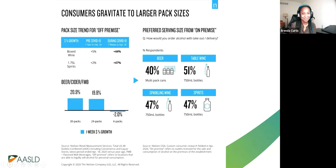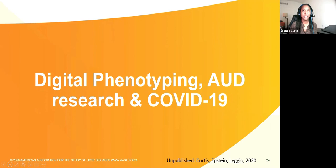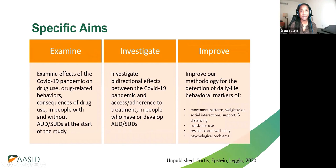We currently have a national sample in the field collecting digital phenotyping, alcohol-related measures, and COVID-related measures. In this study, we're examining the effects of the COVID-19 pandemic on substance use — alcohol and other drugs — drug-related behaviors, consequences of alcohol use, and people with and without an alcohol use disorder or substance use disorder. We're investigating a bidirectional effect of the COVID-19 pandemic on access and adherence to treatment, and improving methodology for detection of daily life behavioral events including movement, weight, and social interactions.